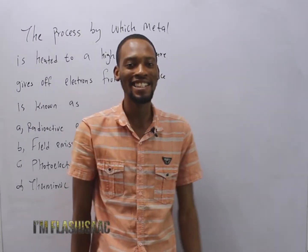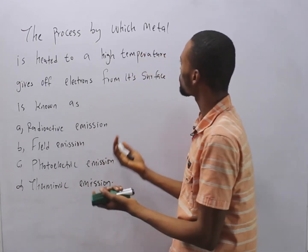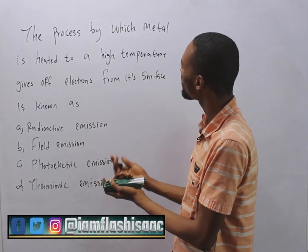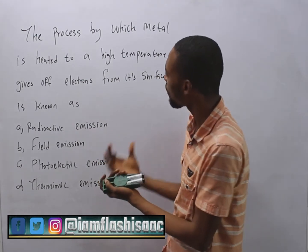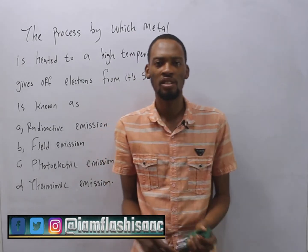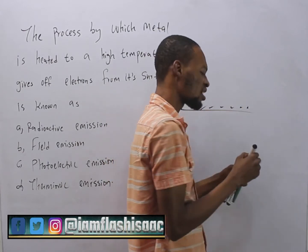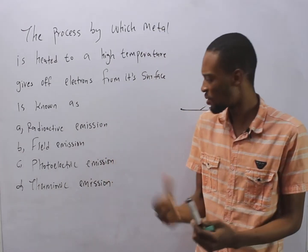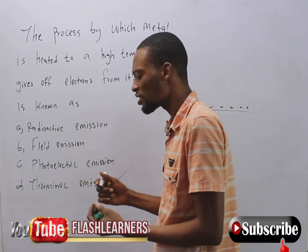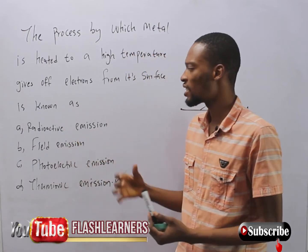Hello guys, I am Flash Isaac. Now let's take a look at this physics question. It says: the process by which a metal is heated to a high temperature and gives off electrons from its surface is known as — so when you heat a metal to a very high temperature so that it begins to give up electrons, the process is called thermionic emission. 'Thermo' means heat, so emission as a result of heat is referred to as thermionic emission.